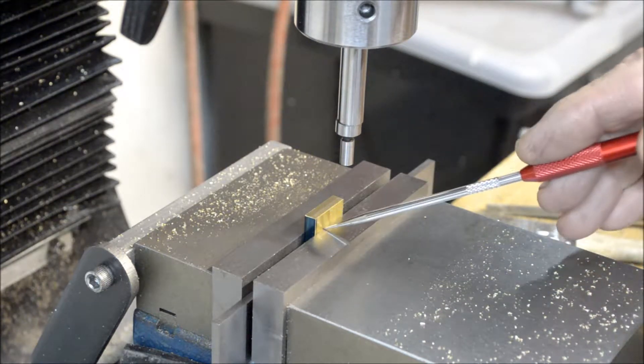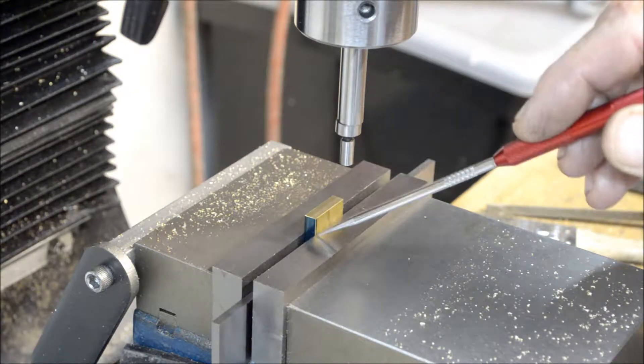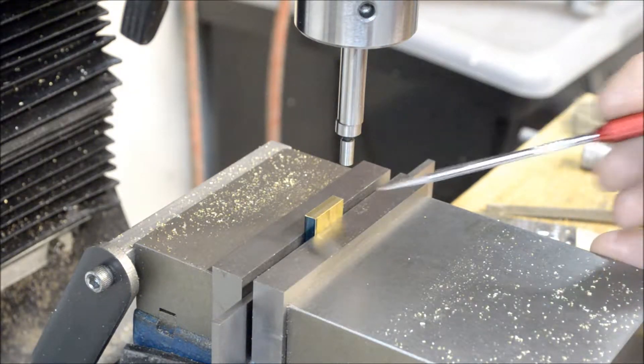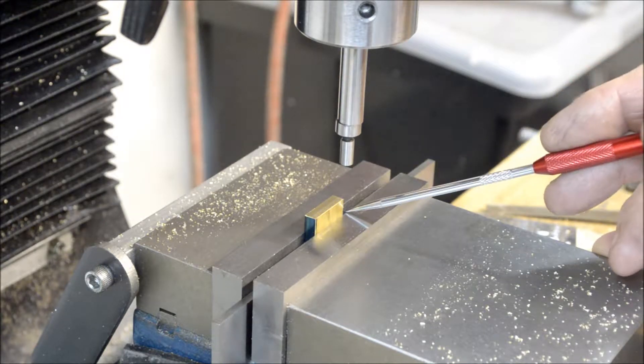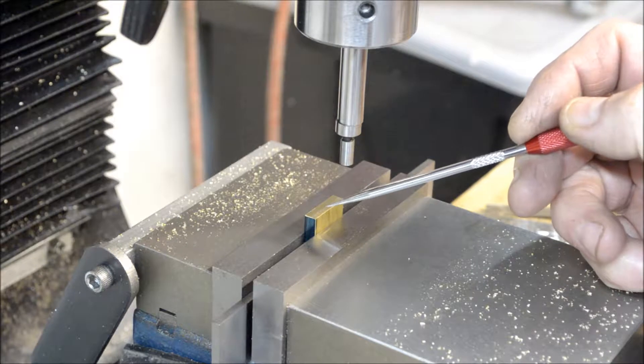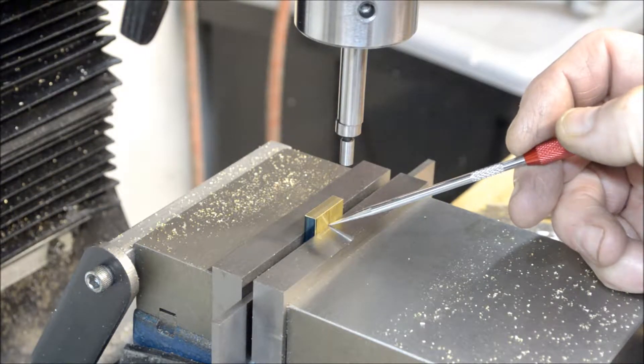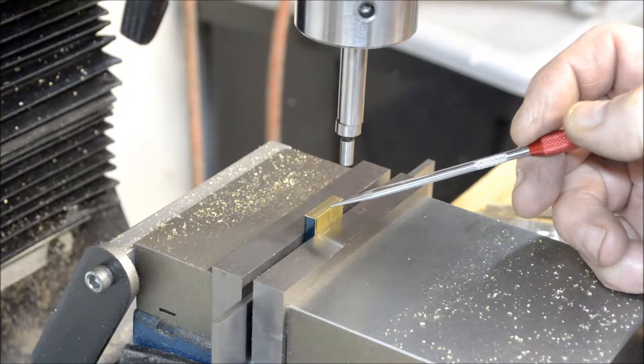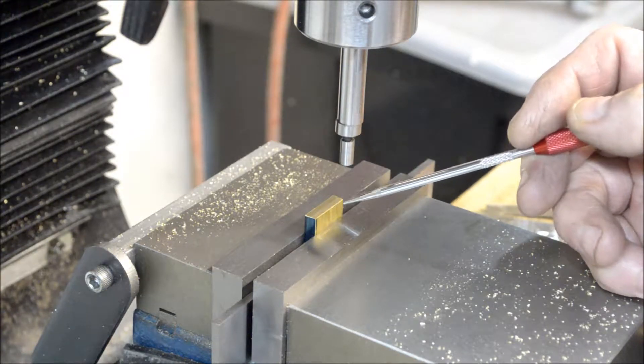Alright, this piece is milled down to 625 thousandths tall, five-eighths of an inch. Got my edge finder. Next operation, we're going to drill a number 38 hole straight through in the center. I'll use my edge finder and pick up the edge on this side.